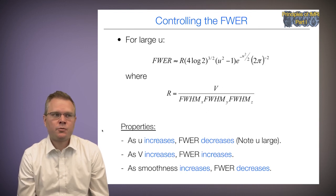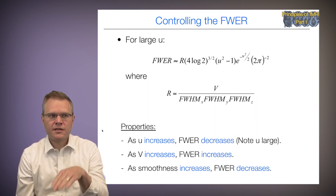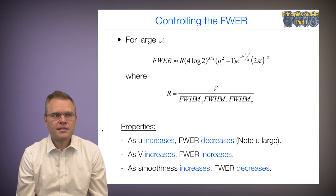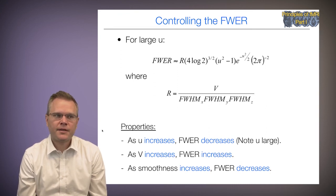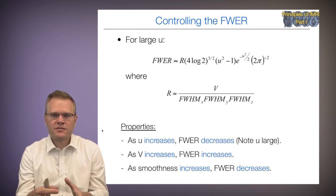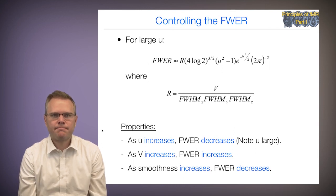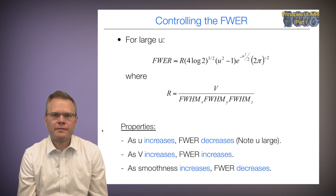Some useful properties of this equation: as u increases, the family-wise error rate decreases, which is expected since a more stringent threshold should reduce false positives. As V increases — more voxels being tested — the family-wise error rate also increases, since more simultaneous tests mean a higher chance of a family-wise error. Finally, as smoothness increases, the family-wise error rate decreases, because smoother images have fewer independent tests — adjacent voxels behave similarly.